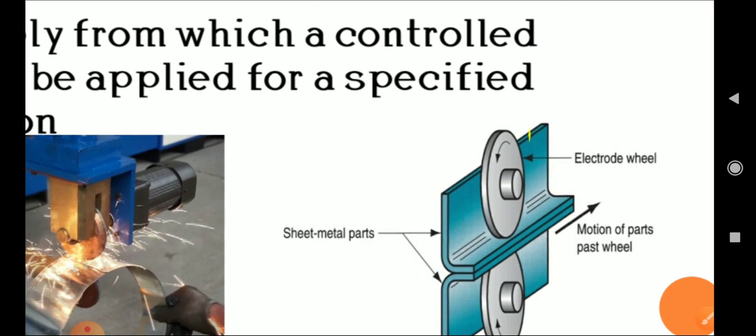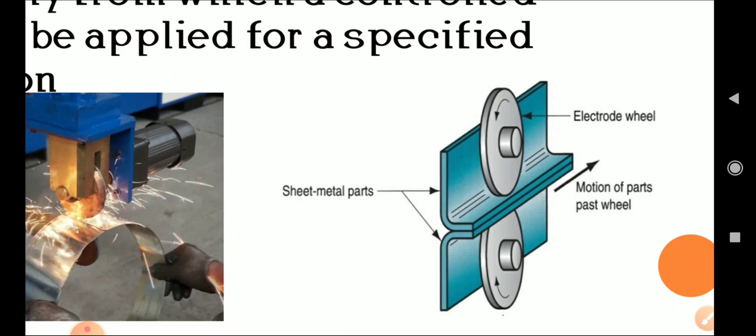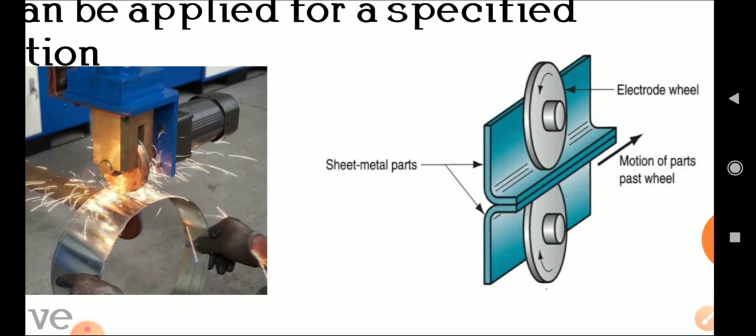You can see the closer view - the two wheels apply pressure at the metal work, and continuously we pass the metal in between the rolls to carry out the weld. We can also see the actual working process in the side figure.